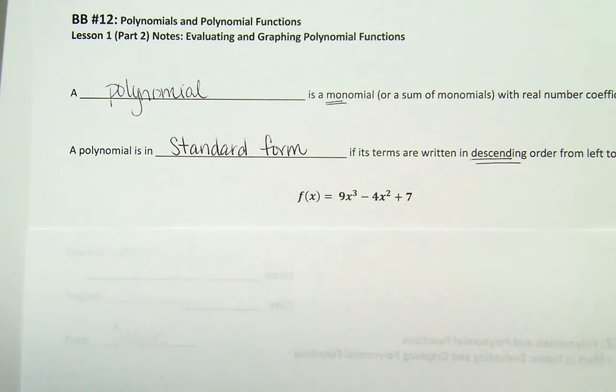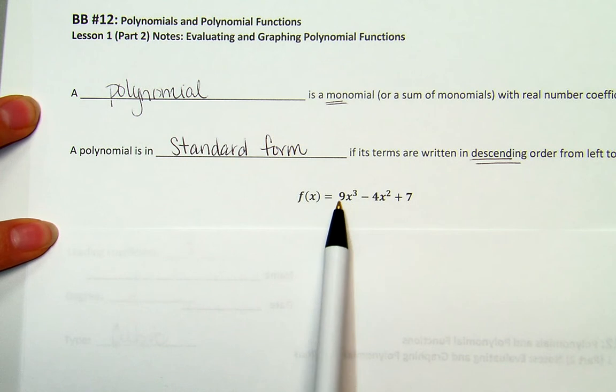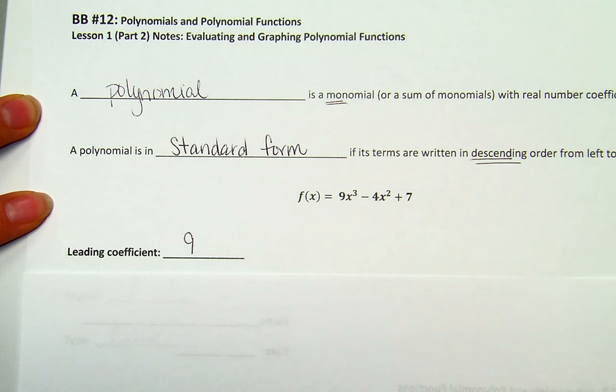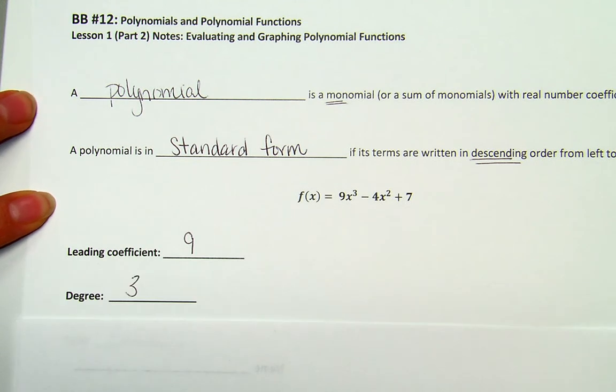So since it's in standard form, there's a couple things that we can pull out from this polynomial. The leading coefficient is always your leading number. It's not the whole term, but it's going to be that leading number, which is 9. Your degree is your highest exponent, which should be part of your first term, which is 3. And we know that degree 3s give us a cubic function.